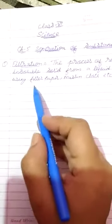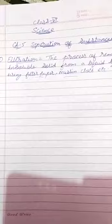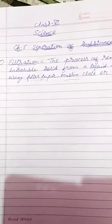Then the insoluble particles remain on the filter. The insoluble particles that remain on the filter are known as residue. And the clear water that is collected is known as filtrate. Commonly used filters are filter paper, muslin cloth, or you can use a layer of cotton or river bed sand.